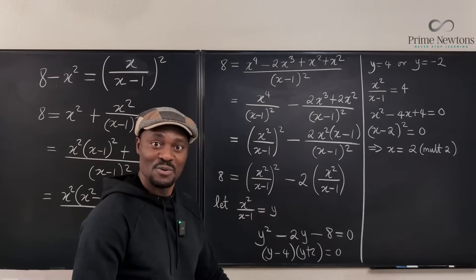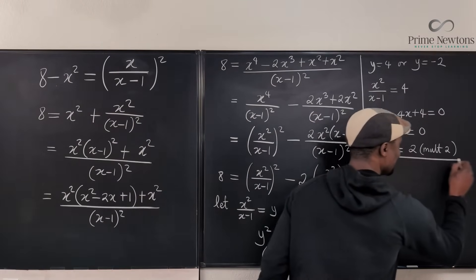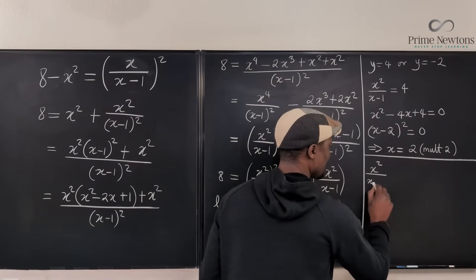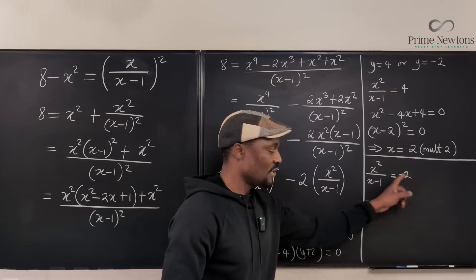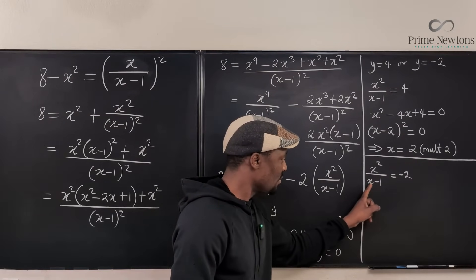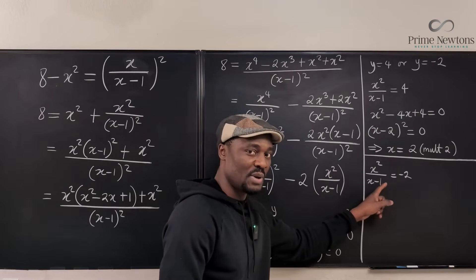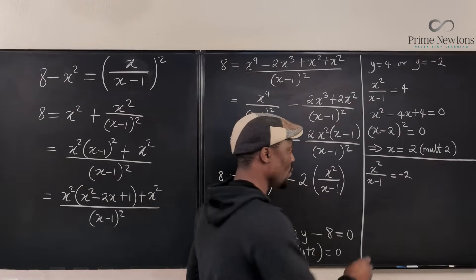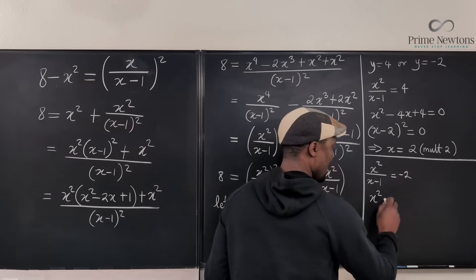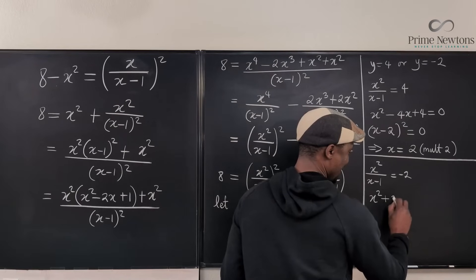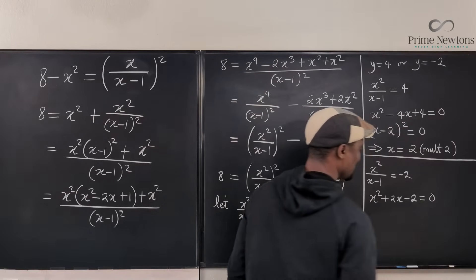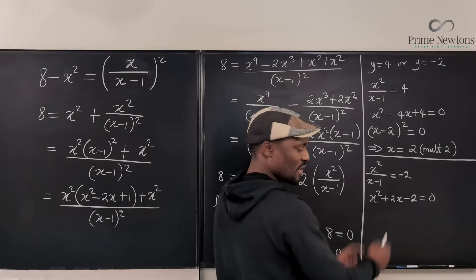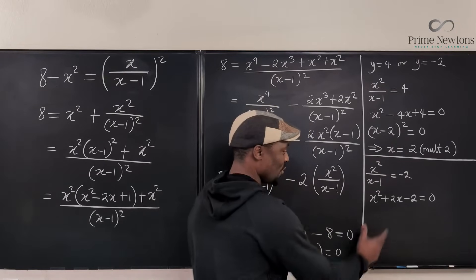For the second equation, we use y equals negative 2: x squared over (x minus 1) equals negative 2. Converting this into a quadratic: the negative 2 multiplies (x minus 1) giving negative 2x, bringing it back gives plus 2x; multiplying gives positive 2, bringing it back gives negative 2. So we get x squared plus 2x minus 2 equals 0. Using completing the square or the quadratic formula — let's do completing the square, focusing on these two terms.